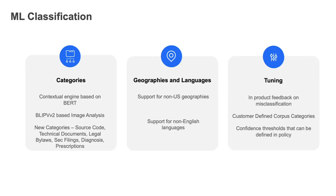It's not looking for specific keywords, patterns, or regex, but it understands the meaning of the document — the meaning of a particular sentence in the document. That way, you get very great accuracy and no false positives. For image analysis, we use a BLIP v2 classifier which understands an image. Rather than looking for a particular driver's license number, it looks at the context.